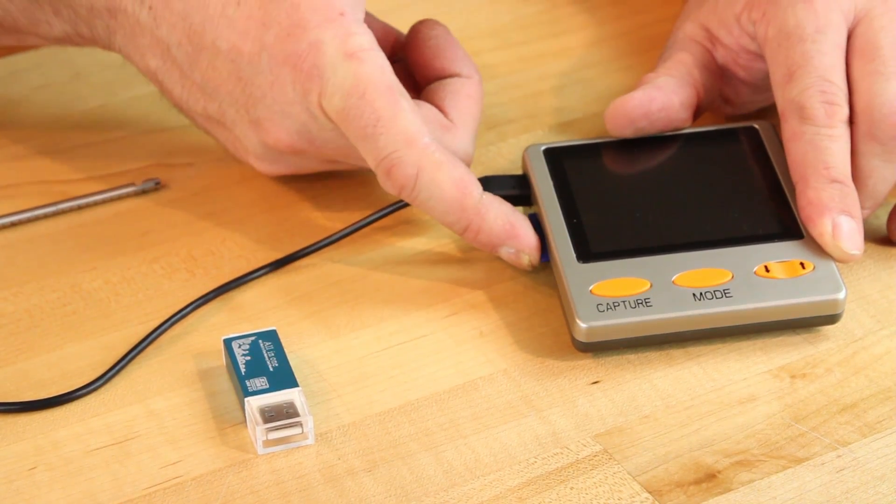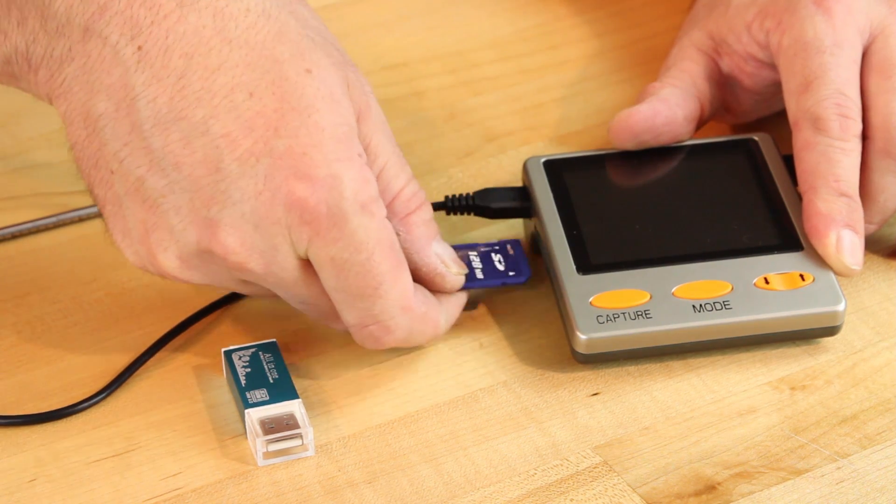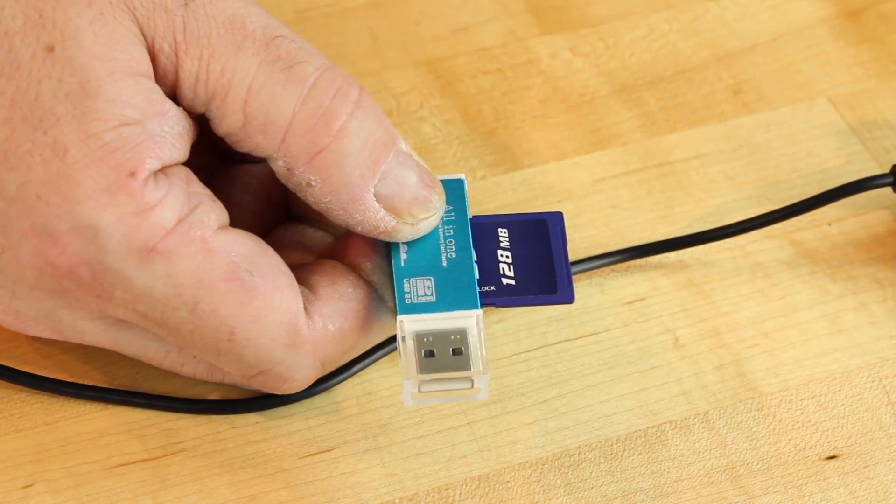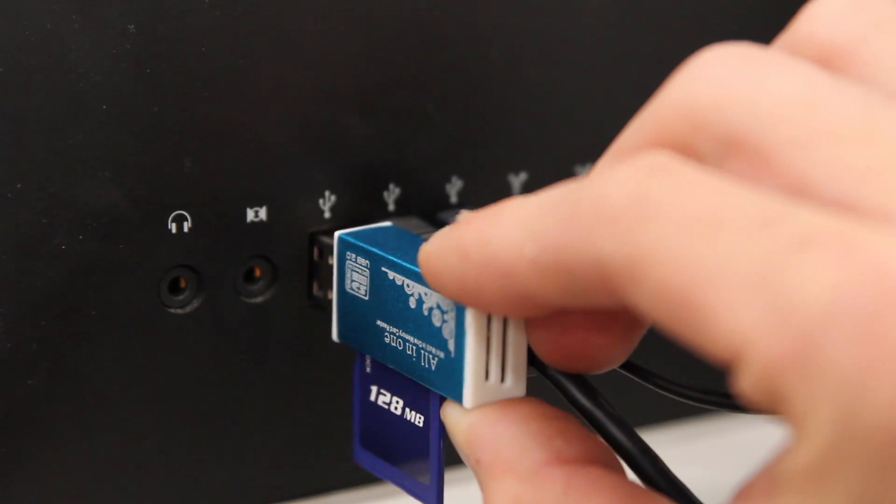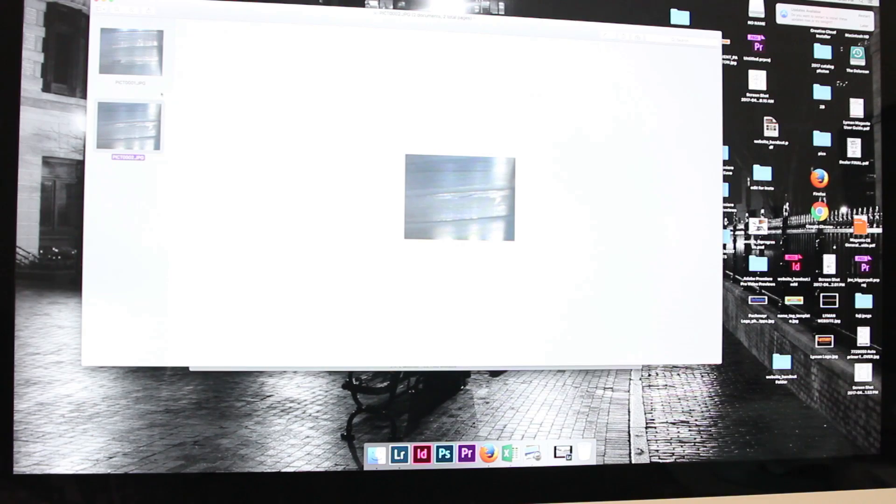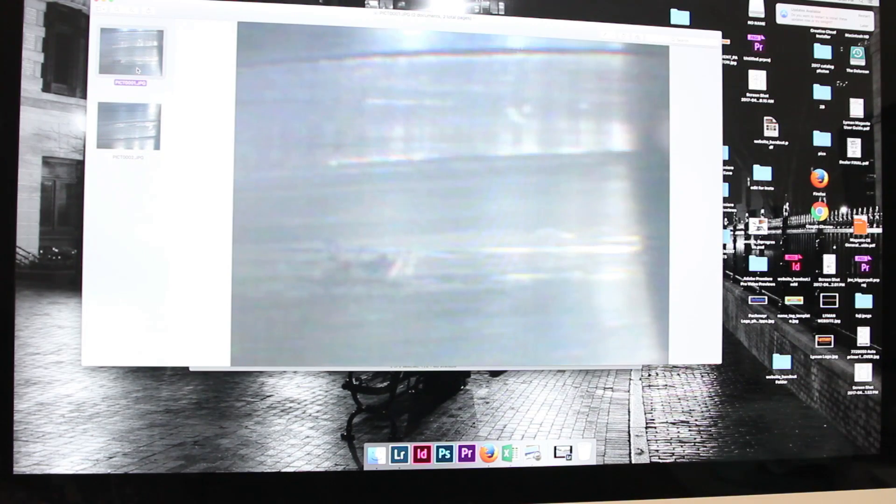To view pictures on your computer, remove the SD card from the monitor and insert the card into the supplied reader. Then insert into an empty USB port on your computer. The Lyman Bore Cam will store up to 3,600 pictures on the SD card provided.